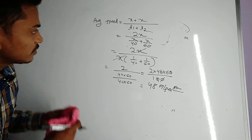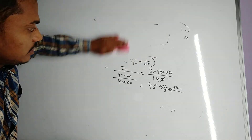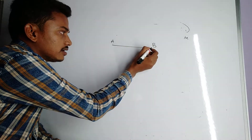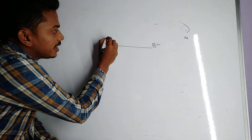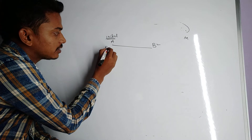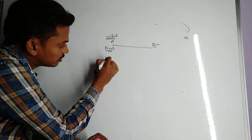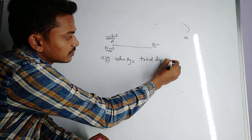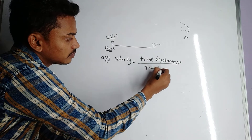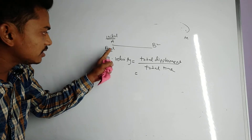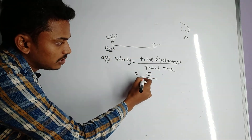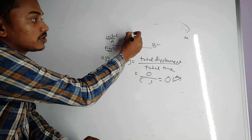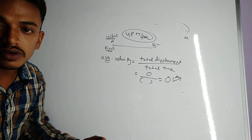For average velocity: the body starts from A, goes to B, and comes back to A. The initial point is A and the final point is also A. So total displacement is zero. Average velocity = total displacement / total time = 0 / (T1 + T2) = 0. So average velocity is zero, while average speed is 48 m/s — two different answers. Thank you.